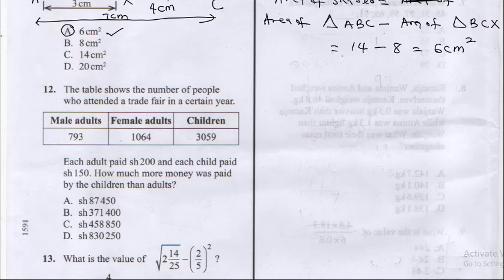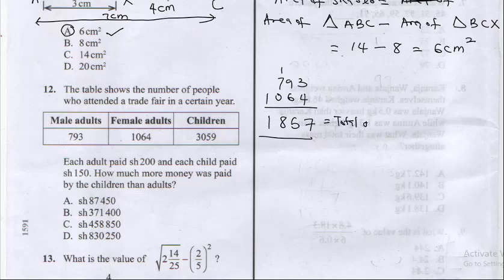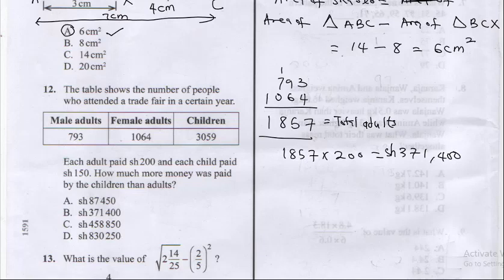The adults include both male and female. We sum the total adults: 793 plus 1064 gives us 1857 total adults. The adults paid 200 shillings each, so 1857 times 200 equals 371,400 shillings paid by adults in total.